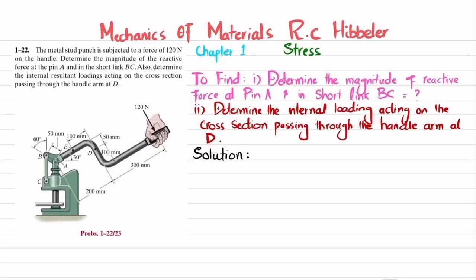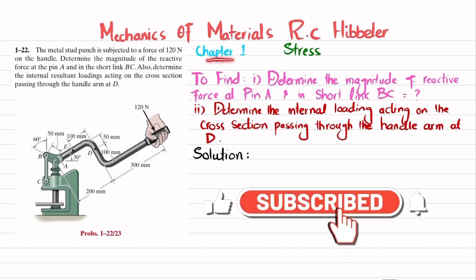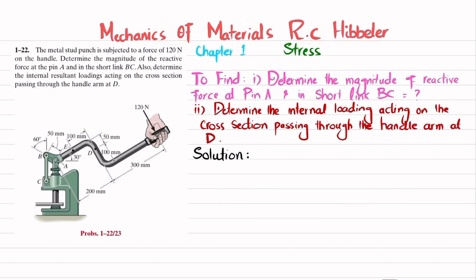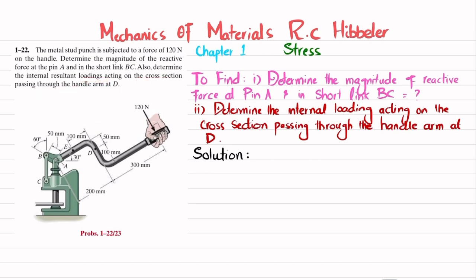Welcome back. In this video we are going to solve problem 1-22 taken from chapter 1 'Stress' in the book Mechanics of Materials by RC Hibbeler. The metal stud punch is subjected to a force of 120 newtons on the handle. Determine the magnitude of the reactive force at pin A and in short link BC, and also determine the internal resultant loading acting on the cross section passing through the handle arm at D.